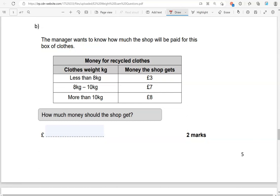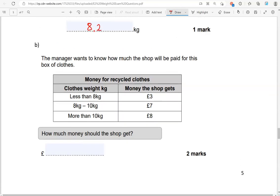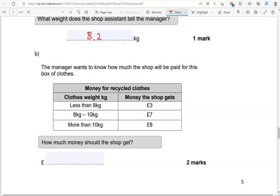The manager wants to know how much the shop will be paid for this box of clothes. We've got clothes weight in kilograms and then money the shop gets. Less than 8 kilograms, 3 pounds. Between 8 and 10 kilograms, 7 pounds. More than 10 kilograms, 8 pounds. This is 8.2, which is between 8 and 10 kilograms. So they will get 7 pounds.